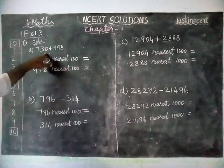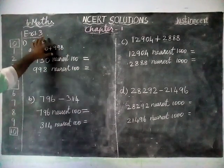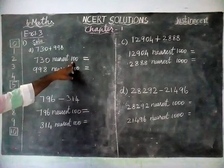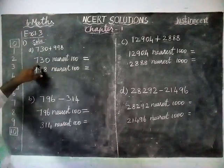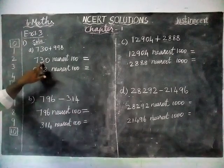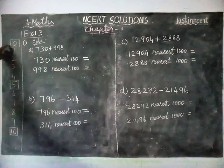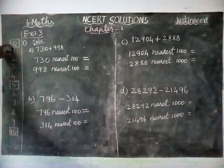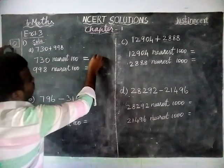The first number is 730 plus 998. This is a 3-digit number, so we are going to round off to nearest 100. Here 730 — the 10th place is 3. When 3 is coming, we have to choose the previous 100. Here previous 100 is 700.